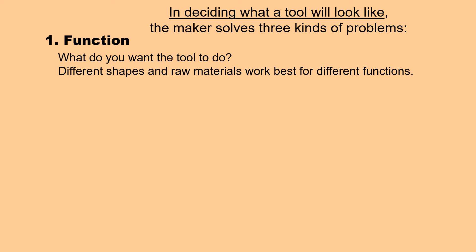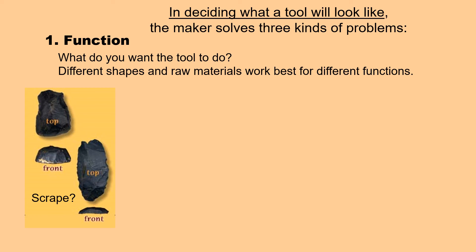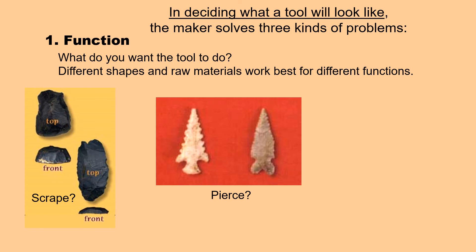Obviously, different shapes work best for different functions, and different raw materials lend themselves best for different functions. Do you want the tool to scrape — perhaps scrape a deer hide? In that case you'd want to make a unifacial scraper such as this, that is smooth and won't poke holes in your hide.